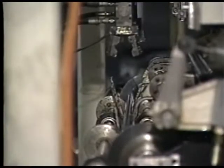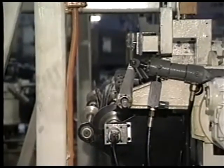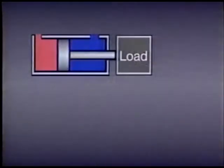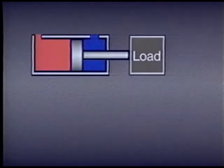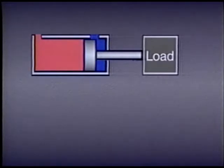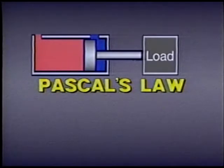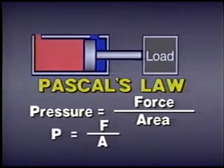In this lesson, we'll examine these basic principles and see how they apply to the operation of all actuators. Let's begin with linear or straight-line actuators. The most common type is the cylinder. When fluid pressure is applied to the piston face, it generates a mechanical force which moves the piston rod and the load in a straight line. How much pressure is required can be calculated using Pascal's law, which states that pressure equals force divided by area — written as P equals F divided by A.